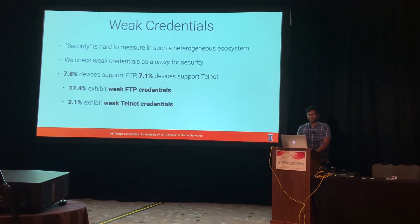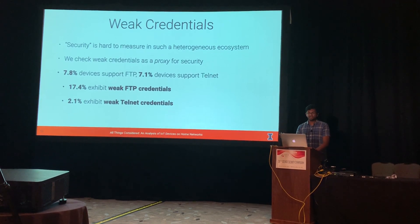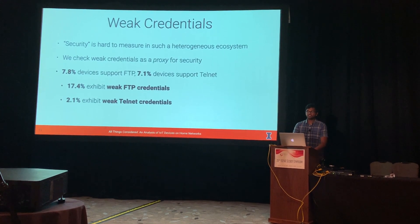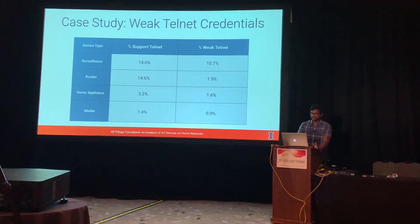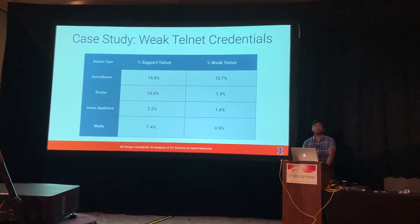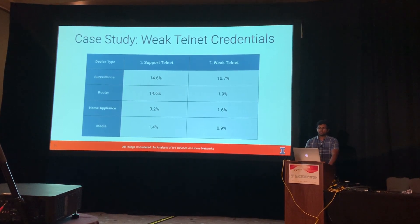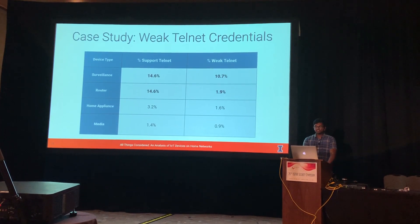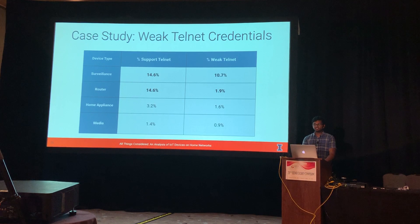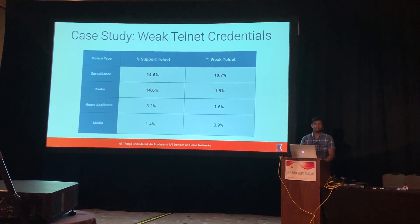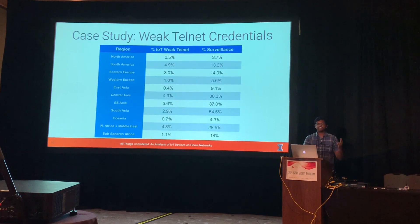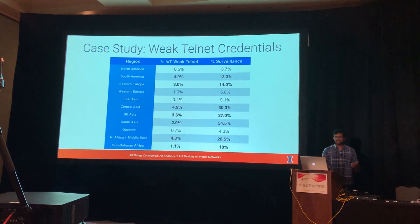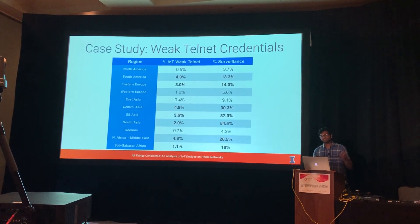Of these, 17.4% of FTP devices exhibit weak FTP credentials, and 2.1% of Telnet devices exhibit weak Telnet credentials. Digging into Telnet devices further, devices that support Telnet come mostly from four categories: surveillance devices, routers, home appliances, and media devices. Of these, surveillance devices and routers have the weakest observed security. In the most egregious case, 10.7% of surveillance devices that support Telnet offer weak credentials. Tying this back to the regions with lots of surveillance devices, there is a correlation between the percentage of surveillance devices in a region and the percentage of weak Telnet devices.